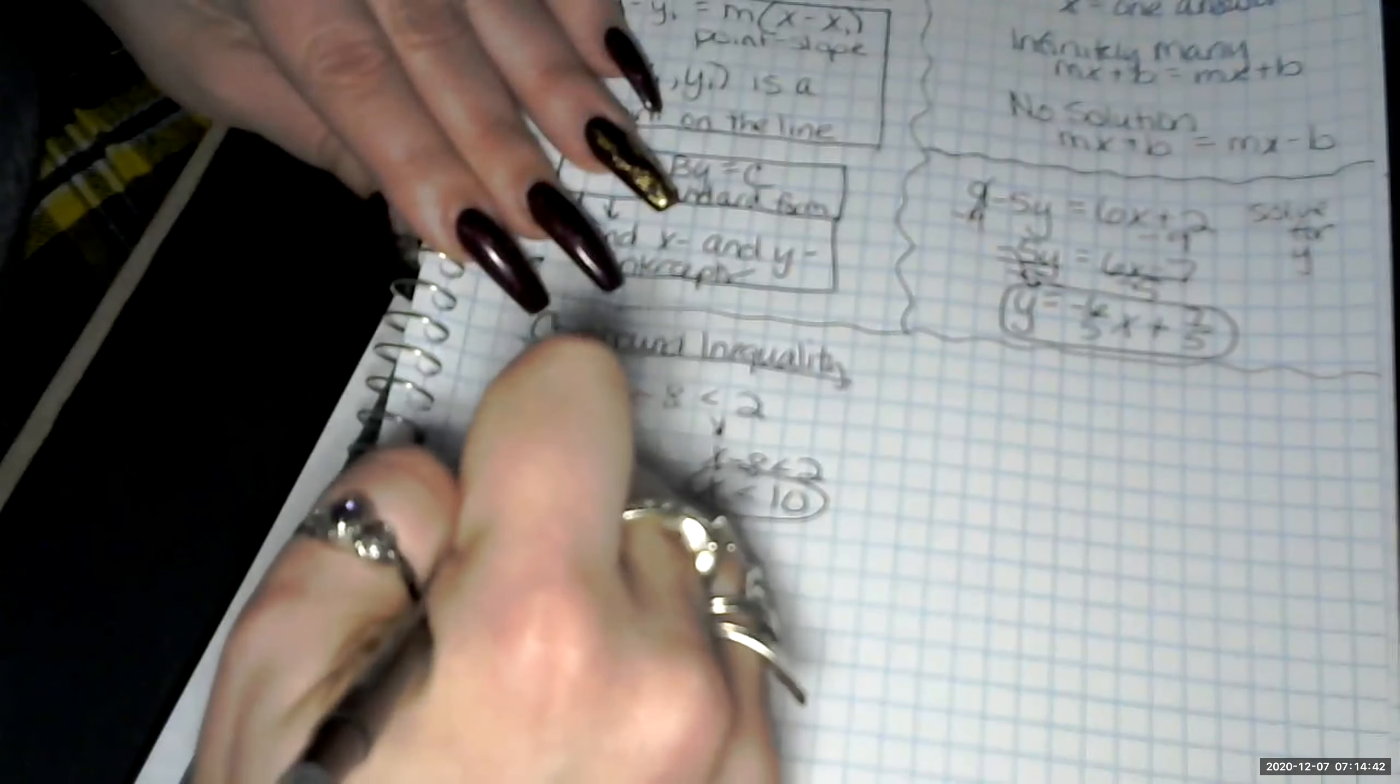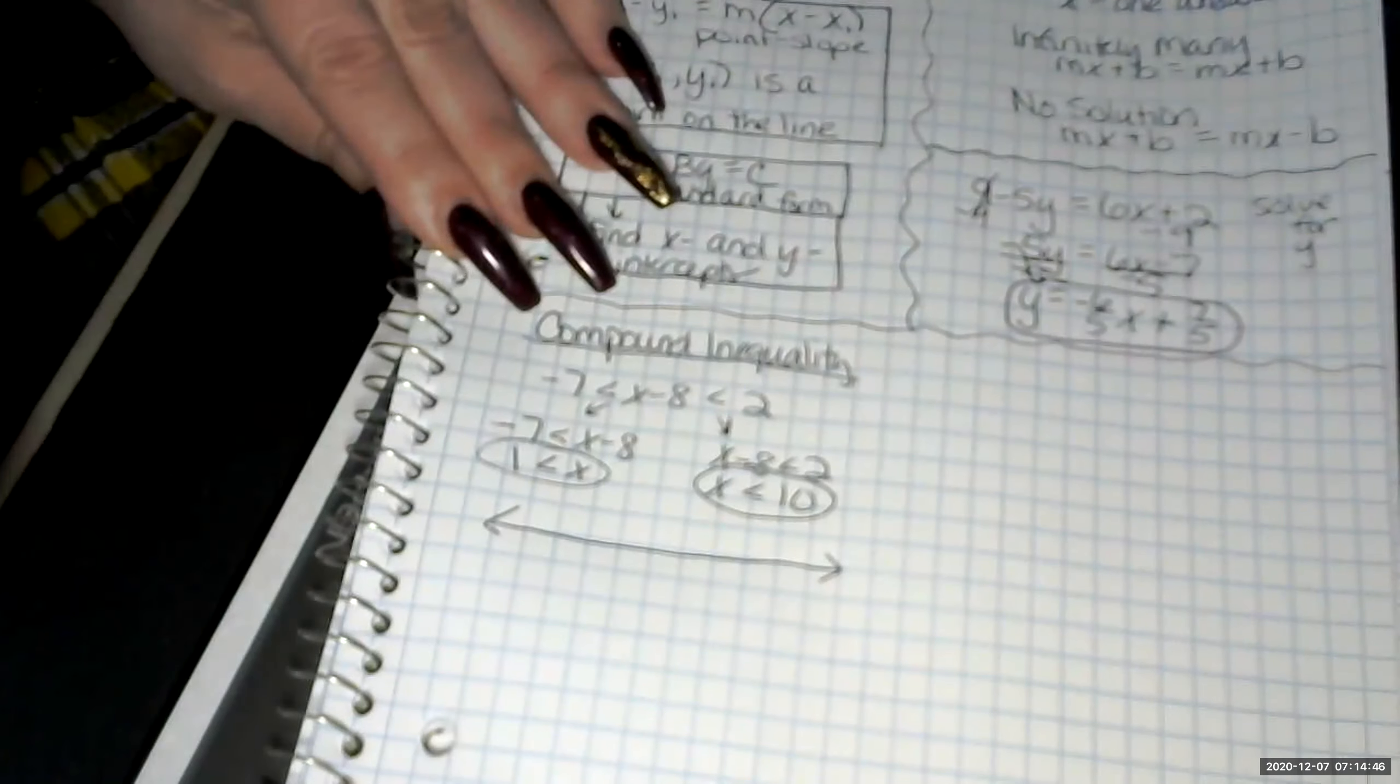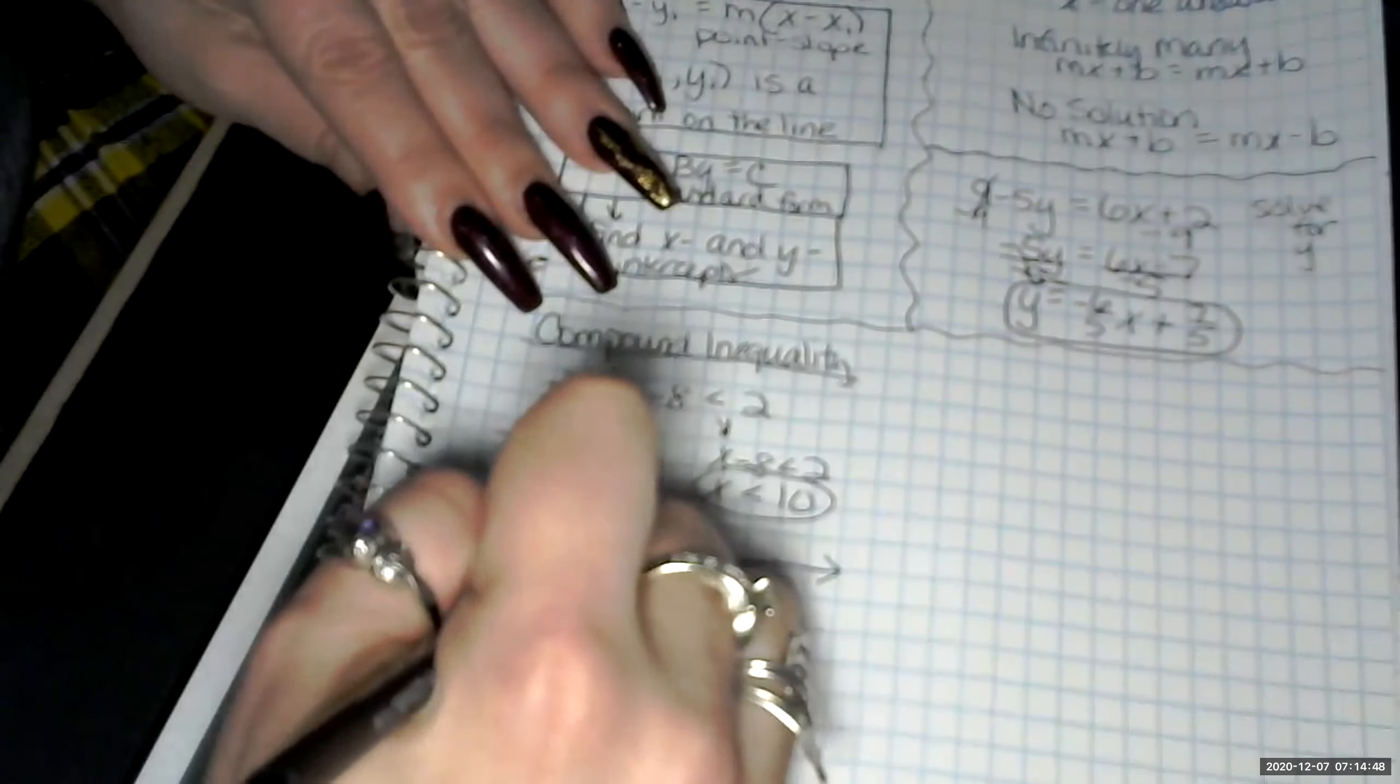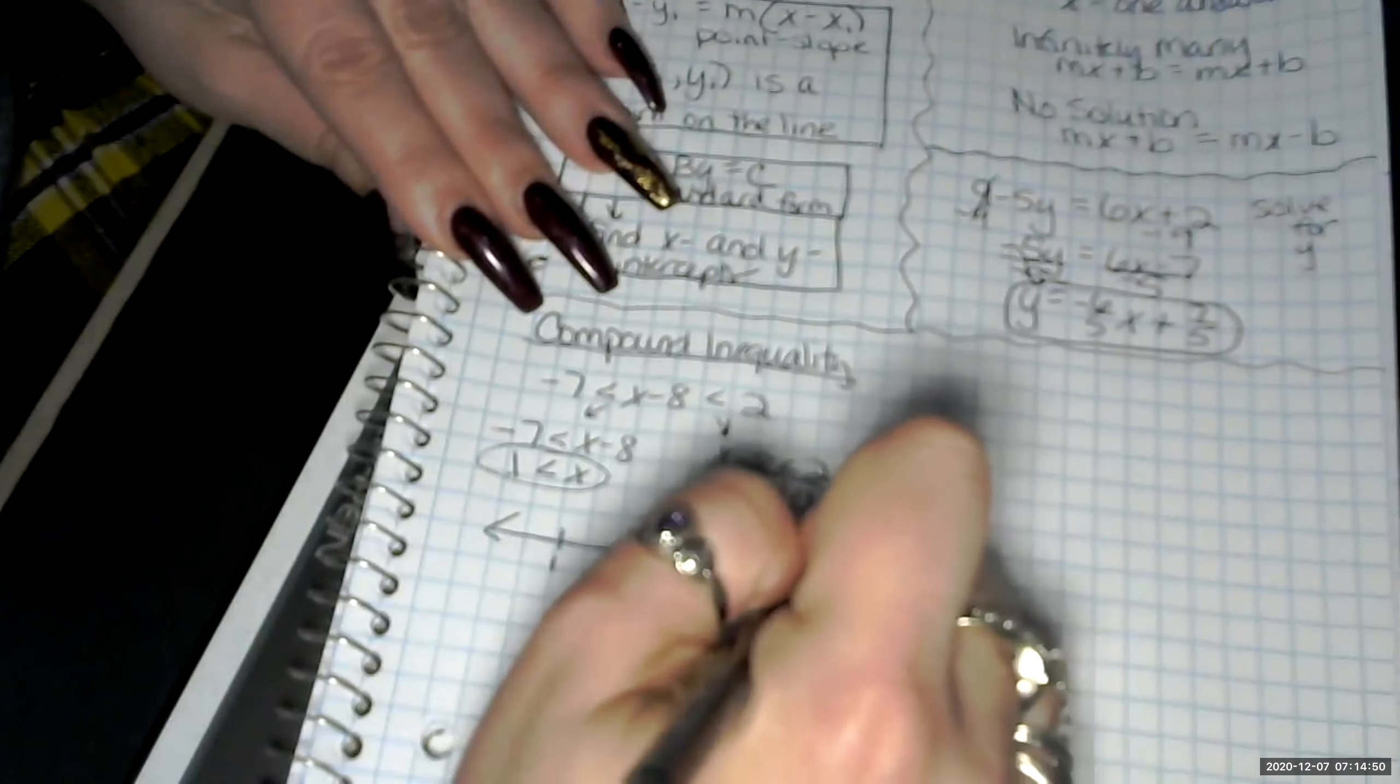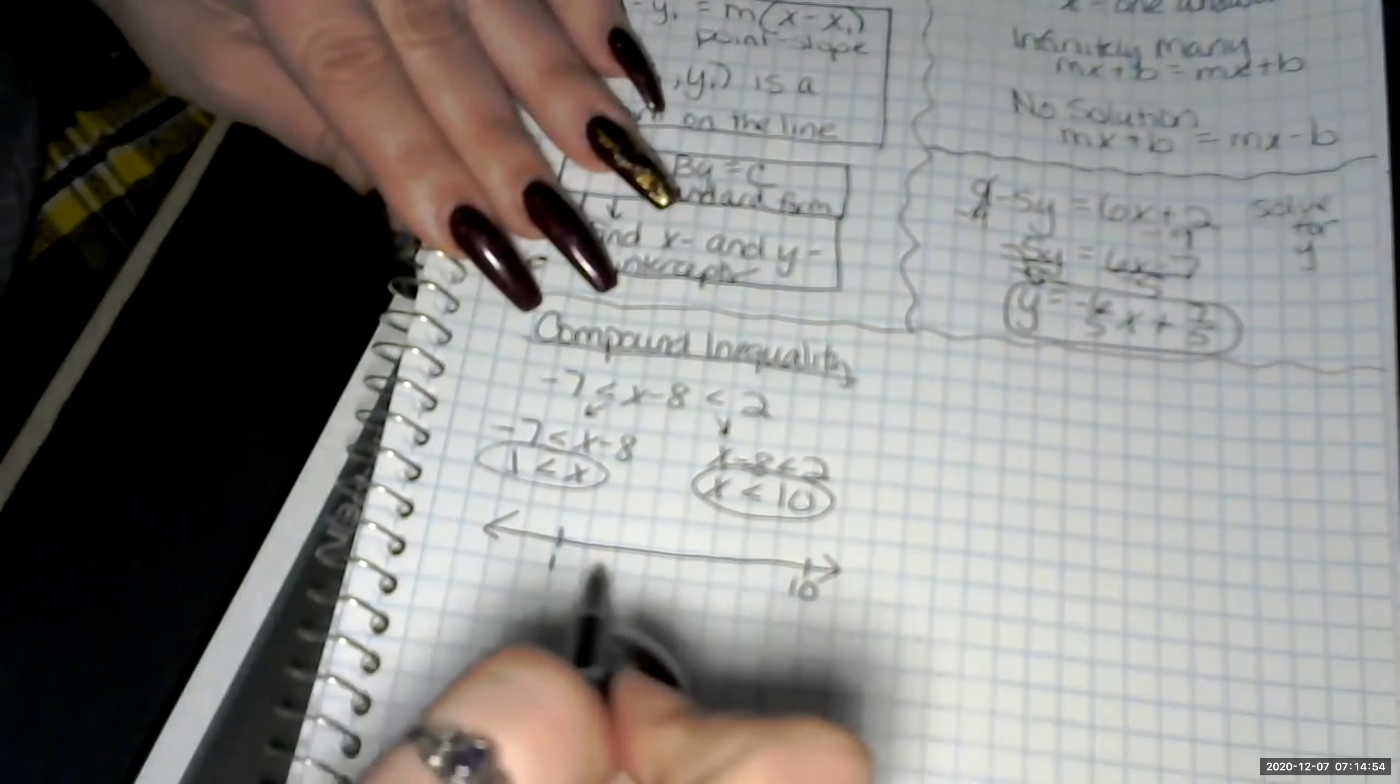Okay. Now we put it on a number line. Our minimum value is 1. Our highest value is 10. This isn't proper, right? Because we do have lines here, but we're just going to kind of ignore those for a moment.